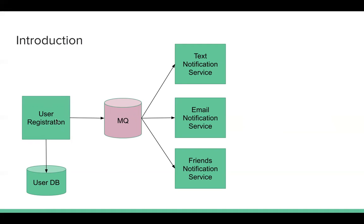At the same time, the user registration service will push three tasks to the message queue: one to text the user, one to email the user, and one to notify the user's friends. The text notification service will send a text welcoming the user and sharing promotions. The email notification service will send an email with promotions. And we will notify the user's friends that this user has joined the platform.